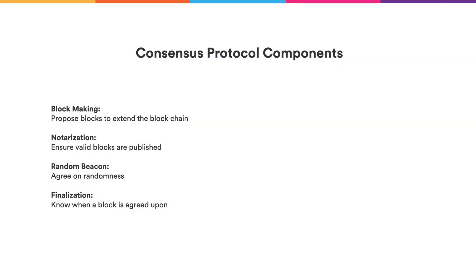In summary, we have a consensus protocol that consists of four components. The block maker creates candidate blocks to extend the blockchain. The notarization process ensures valid blocks are identified. The random beacon ranks block makers and reduces the number of notarized blocks per round. And the asynchronous finalization mechanism lets us know when a blockchain is agreed upon without relying on networking assumptions. Together, this allows replication within a subnet to give us the security and reliability we want from the internet computer.